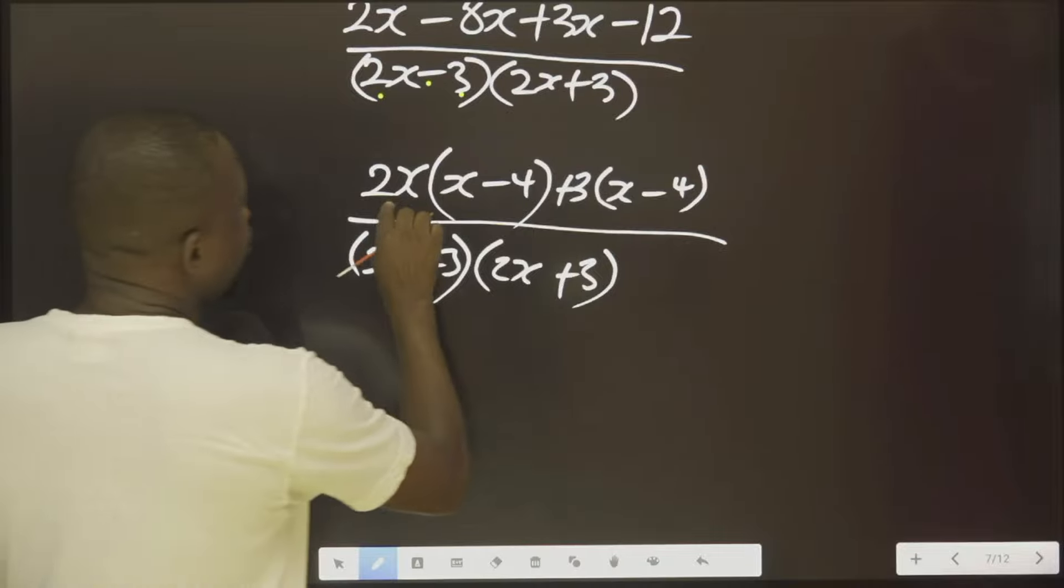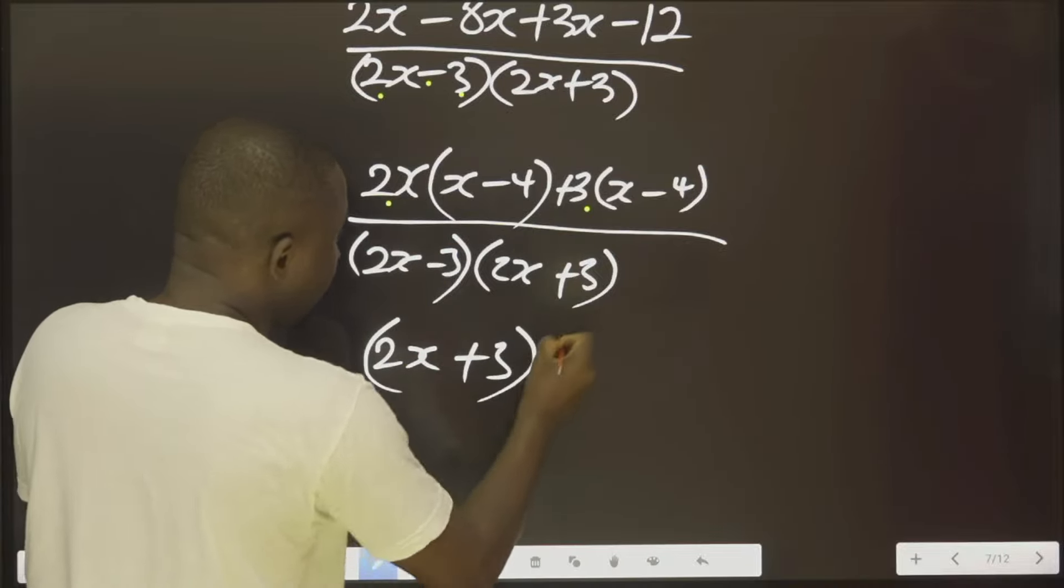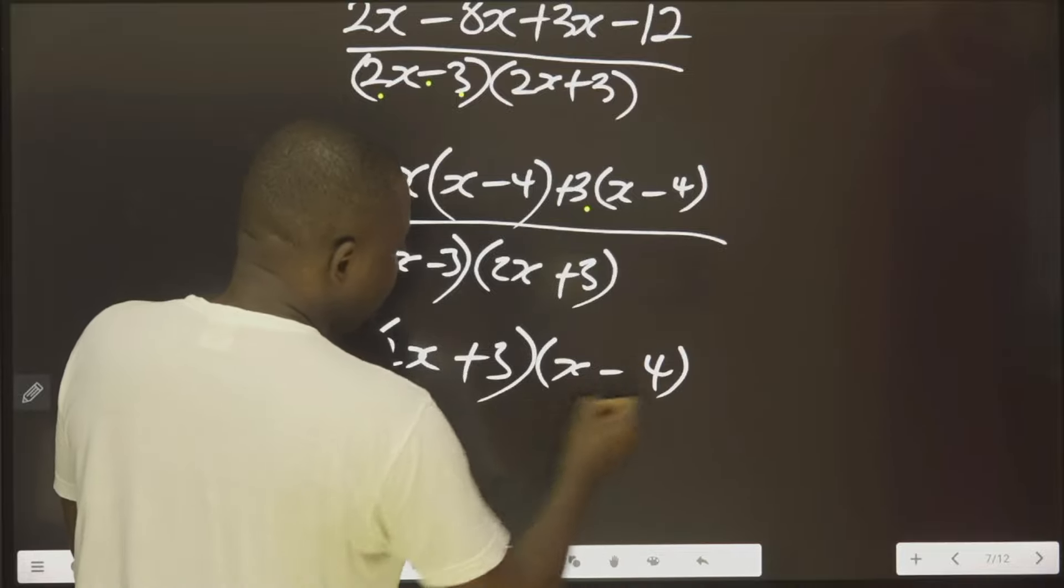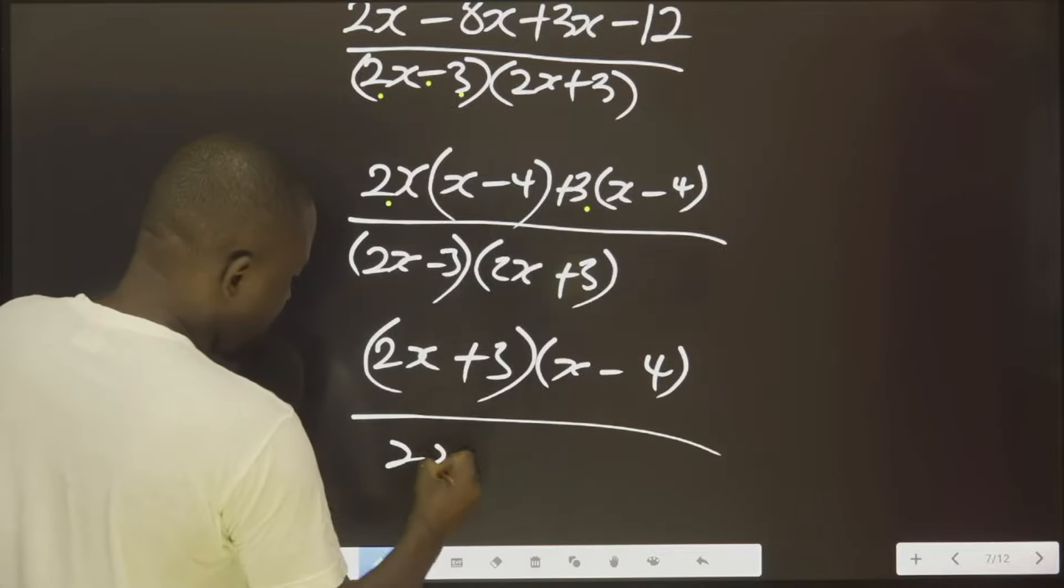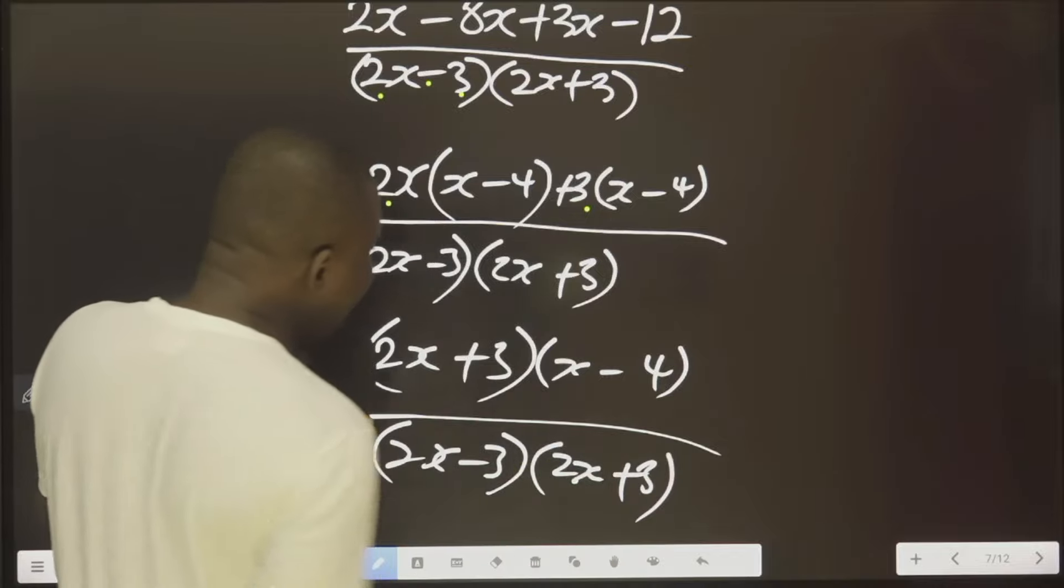Let's continue. We take this at this. 2x plus 3, x minus 4. Then we repeat this again. Now we can cancel.